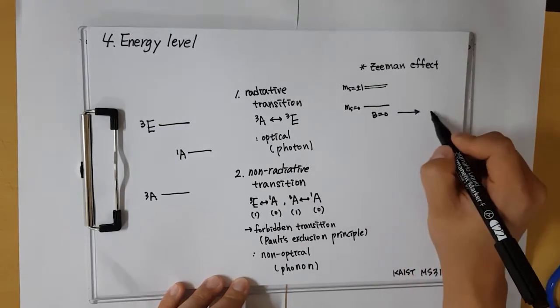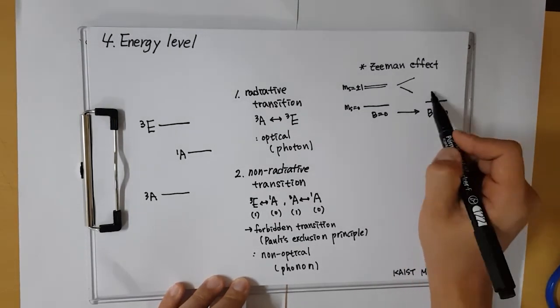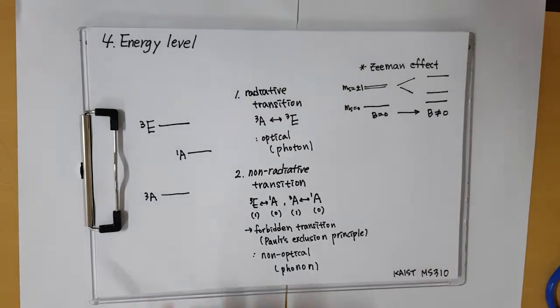If they split it, ms minus 1 state is nearby ms zero state. This is called Zeeman effect.